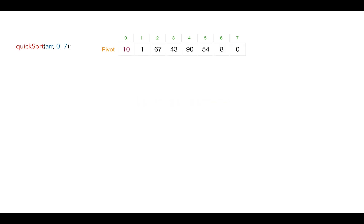Let's pick 10 as the pivot. We're going to take two pointers — a left pointer and a right pointer. Left is at the leftmost element and right is at the rightmost element. We will compare the left pointer element with the pivot independently. If it is less than or equal to the pivot, then the current element is already placed at the right cell and we don't do anything — we move on by incrementing the left pointer. Then we go to the right pointer and compare the element at that position with the pivot. If it is greater than the pivot, the element is at its right place and the right pointer moves towards the left.